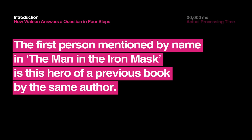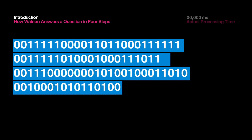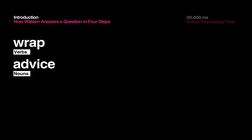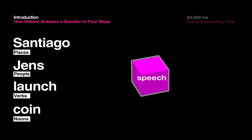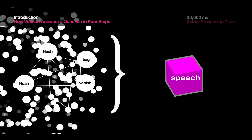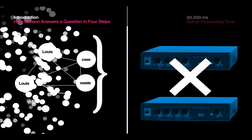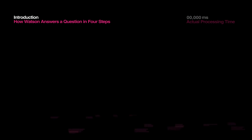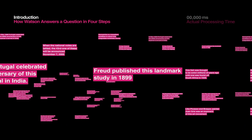Much less a computer. Remember, a computer understands code — ones and zeros — not nouns and verbs or people and places, let alone the relationships between them. Watson can't see or hear, so audio and visual questions are off limits, but everything else is fair game.